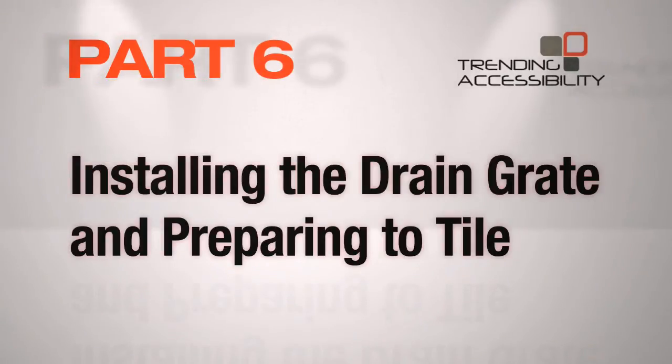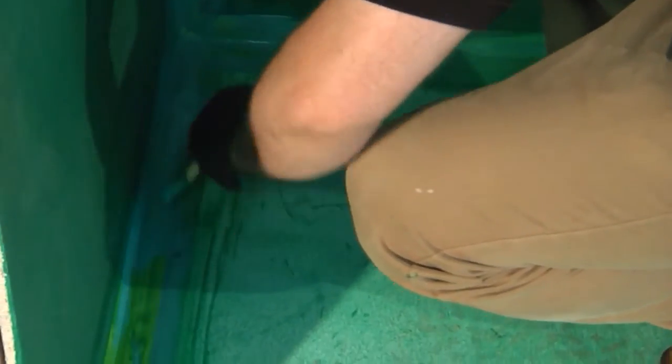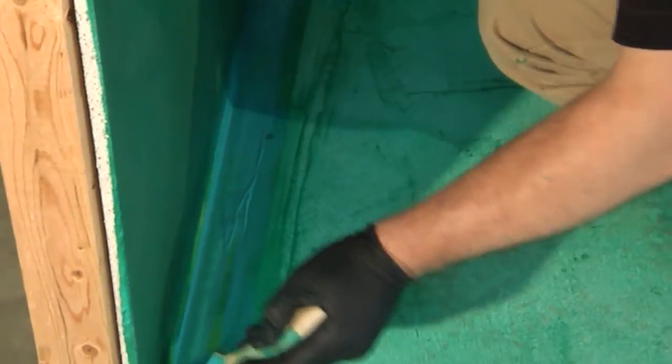Part 6: Installing the drain grate and preparing to tile. Before you start tiling, look at your tape joints to see if you have any wrinkles or bubbles in the tape. If you find them, make small slits in the tape and fill them with liquid waterproofing.